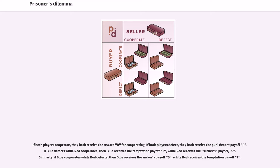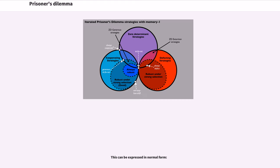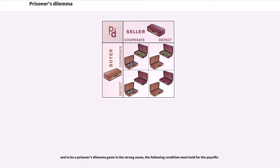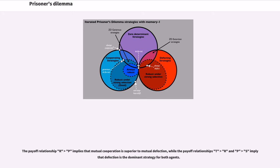Similarly, if blue cooperates while red defects, then blue receives the sucker's payoff S, while red receives the temptation payoff T. This can be expressed in normal form. To be a prisoner's dilemma game in the strong sense, the following condition must hold for the payoffs: the payoff relationship R > P implies that mutual cooperation is superior to mutual defection, while the payoff relationships T > R and P > S imply that defection is the dominant strategy for both agents.